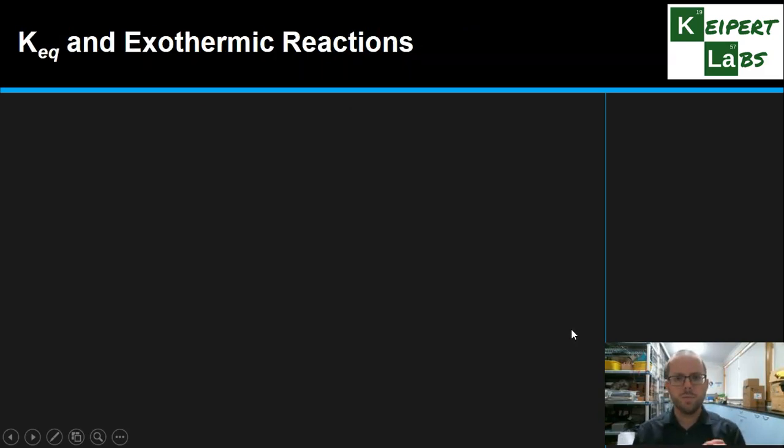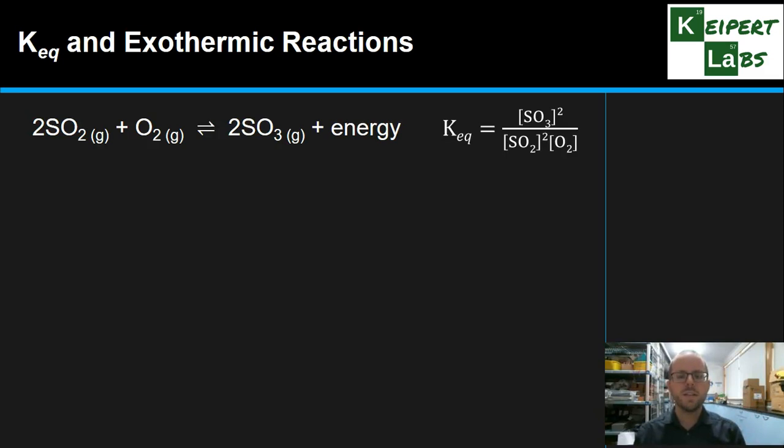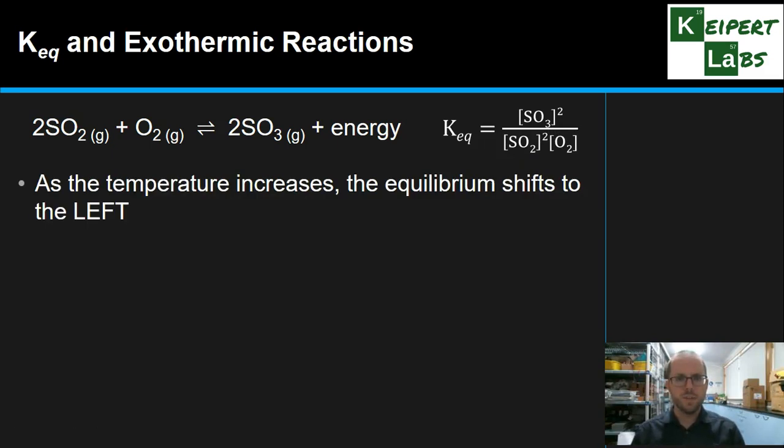But what we're going to see is that temperature does something different. So, the first thing we want to focus on is an exothermic reaction. We're going to consider this reaction here. The formation of sulfur trioxide is exothermic. So, as we combine sulfur dioxide, SO2, and oxygen gas, we produce two moles of SO3 and then some energy that leaves the system. And this is our equilibrium expression over here, once we've factored in the coefficients and everything. I'm going to keep drawing attention to this fraction as we go.